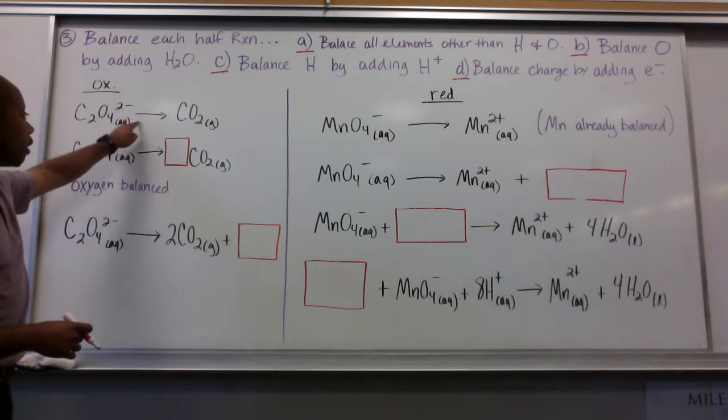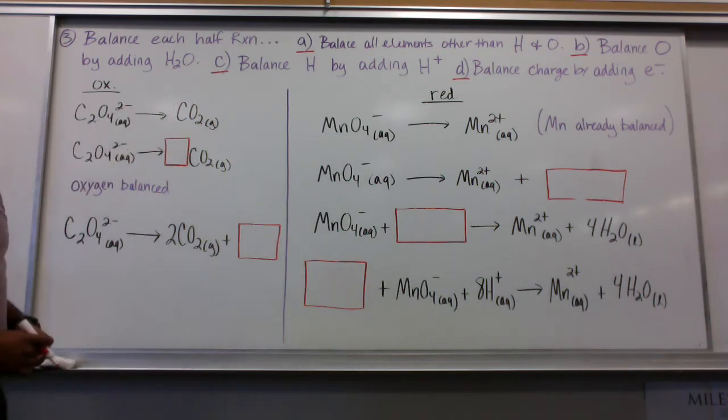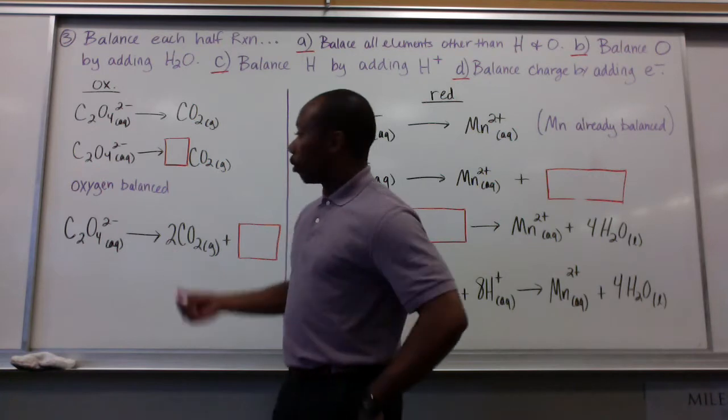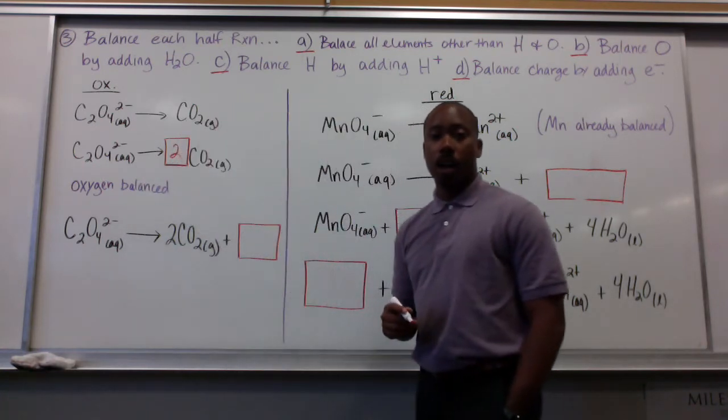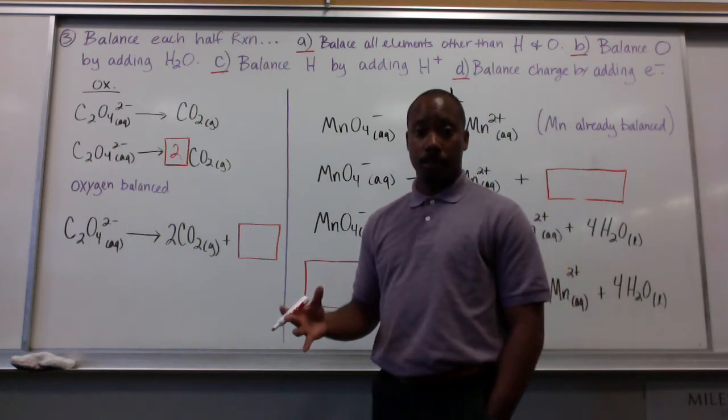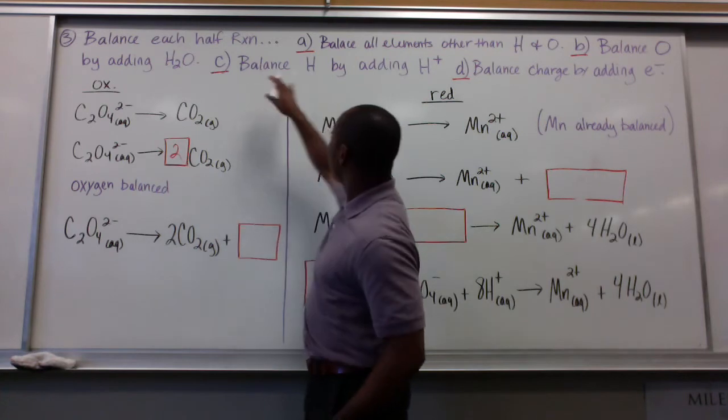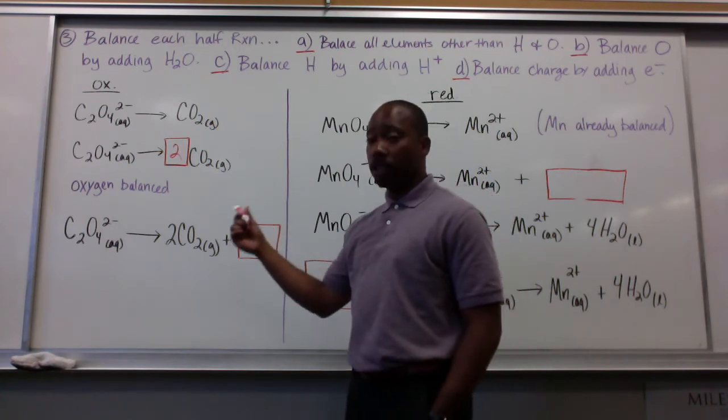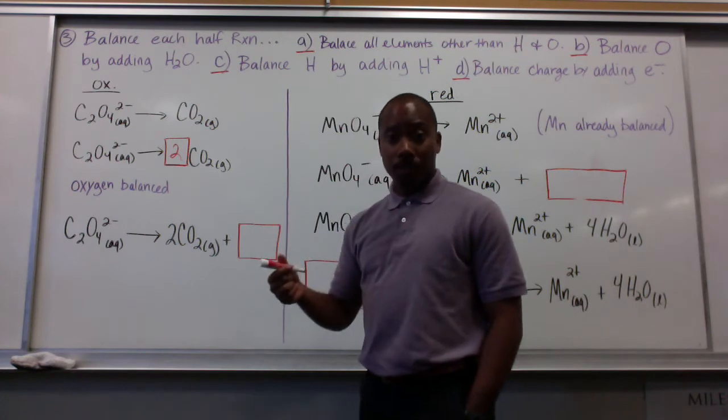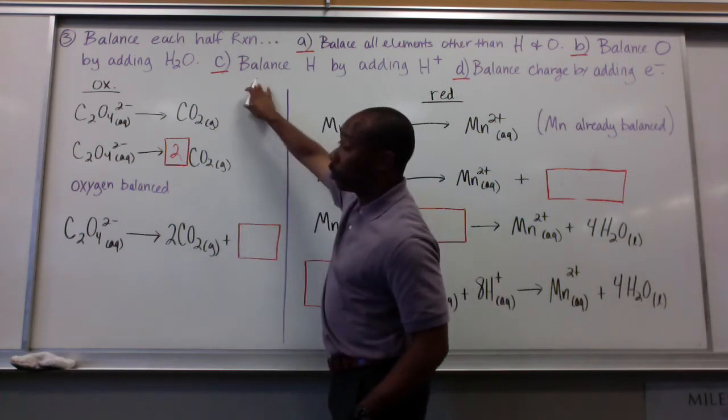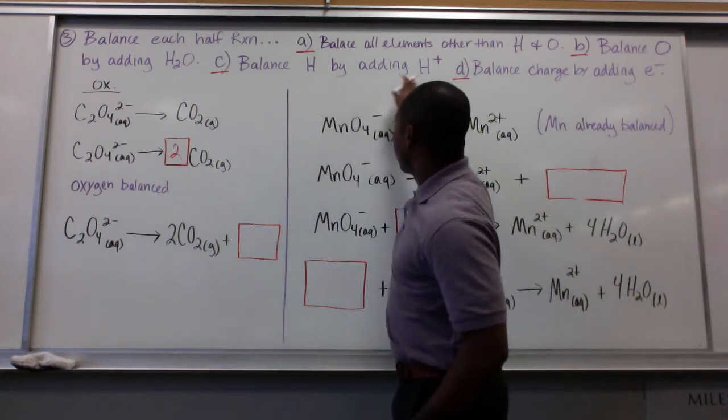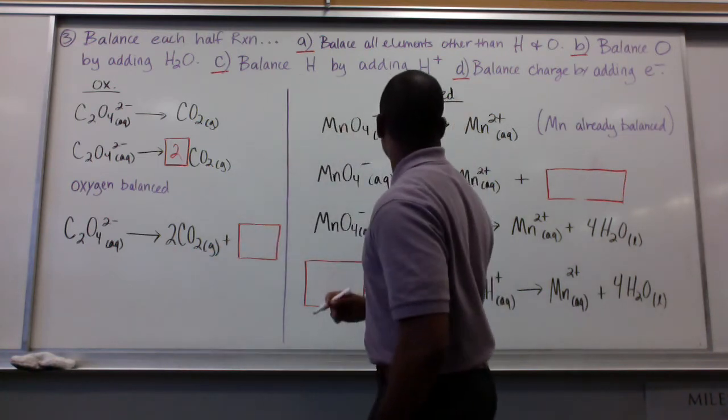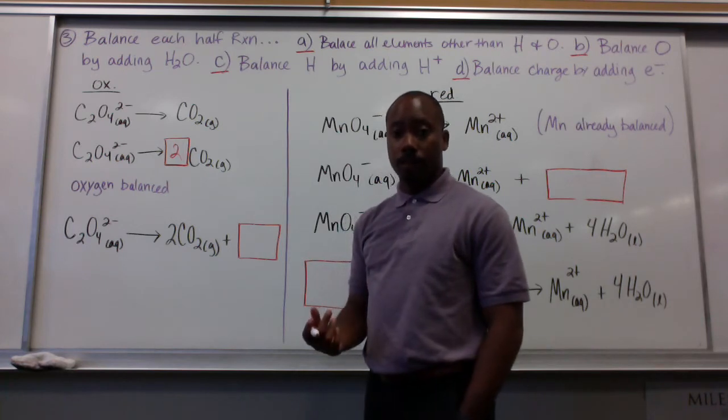Now, we're going to first handle just the oxidation half reaction. We have C2O4 2- and CO2. For letter A, balance all elements other than H and O. Well, that means carbon. So here we balance our carbon by putting a coefficient of 2 there. Our carbons are balanced, and putting that 2 there also balances our oxygens. Since our oxygens are now balanced, we do not have to go to letter B. We don't have to add H2O in this case because that coefficient balanced our oxygens. Since we don't have to add waters, that means we don't have any hydrogens present. So letter C also is not applicable here.